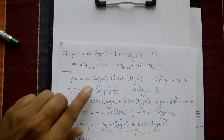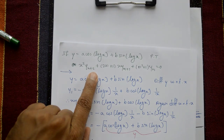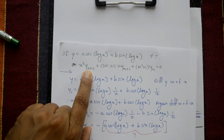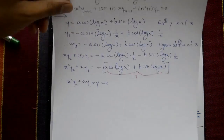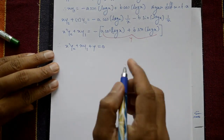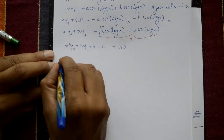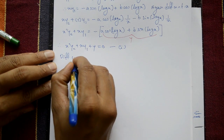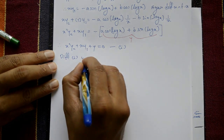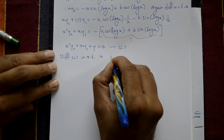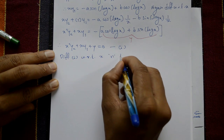So, right hand side, both are negative. Take minus outside, make bracket and make a plus. Now, this part inside the bracket is the given y. Therefore, x square · y2 plus x·y1, shift left hand side, minus y becomes plus y equal to 0. This is equation number 1. Differentiate equation number 1 with respect to x, n times.